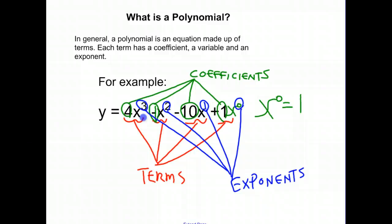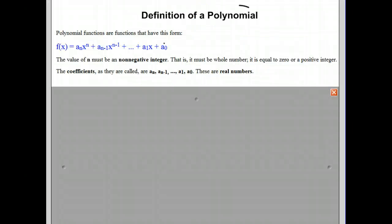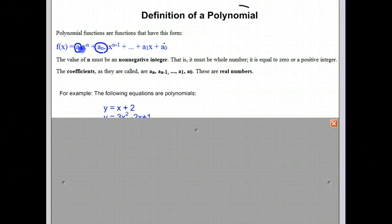The term polynomial is an equation made up of many terms. The name actually comes from poly, meaning many, and nominal, meaning terms. The formal definition of a polynomial is any function that could be put in the form of a coefficient times a variable raised to a power. The coefficients must be real numbers, and the exponents must be 0 or positive. Any function that can be put in that form is considered to be a polynomial.